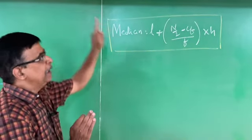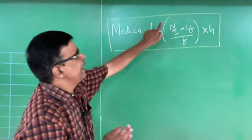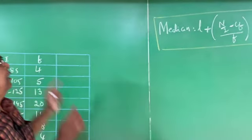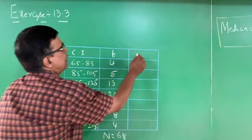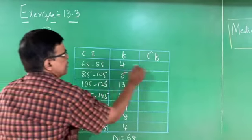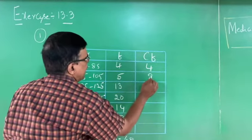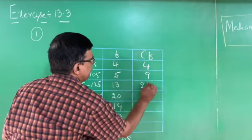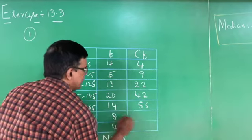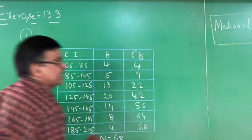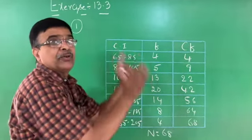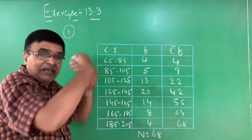The given two columns are class interval and frequency. The third column is cumulative frequency (CF). Adding frequencies one by one: 4, 4+5=9, 9+13=22, 22+20=42, 42+14=56, 56+8=64, 64+4=68. N equals 68, confirming the total number of consumers.